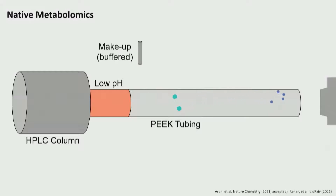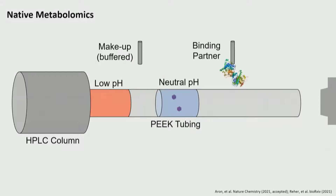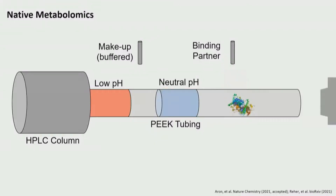We offer all the molecules that are eluting a binding partner. We tried this first with metals, which worked quite well, but have now moved on to proteins, which we post-column infuse. When the small molecule binds, we see a mass shift in the intact analysis.